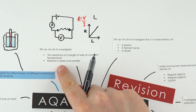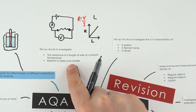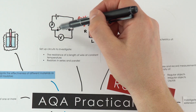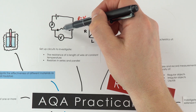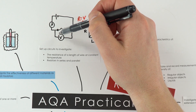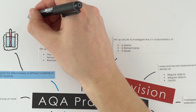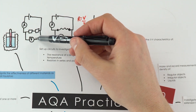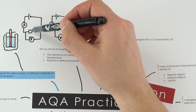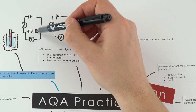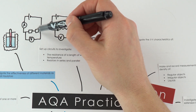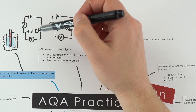You can also look at resistors in series and parallel using the same circuit setup with an ammeter and voltmeter, replacing the wire with a combination of resistors. The voltmeter should go across both resistors. You should find that more resistors in series increases the total resistance, while resistors in parallel decreases the total resistance.